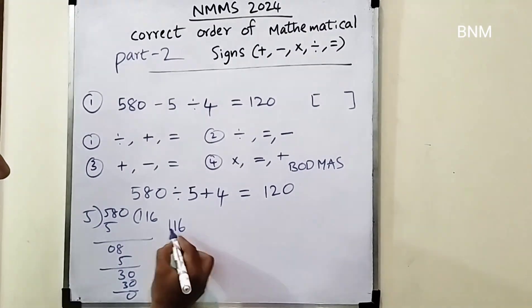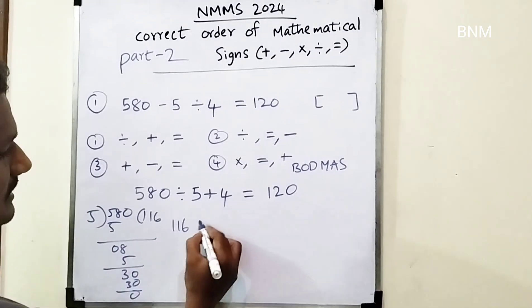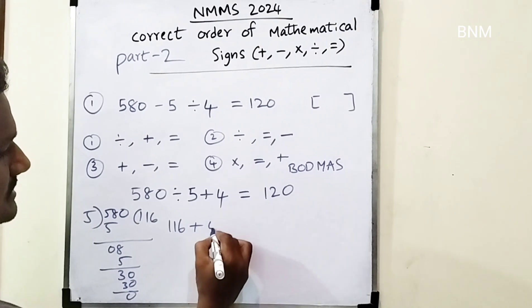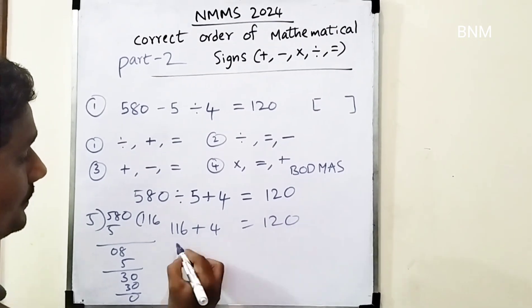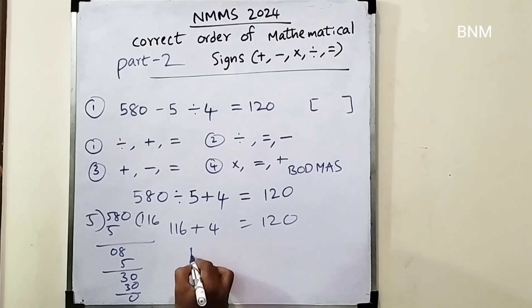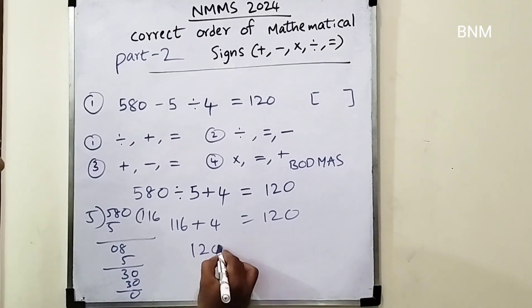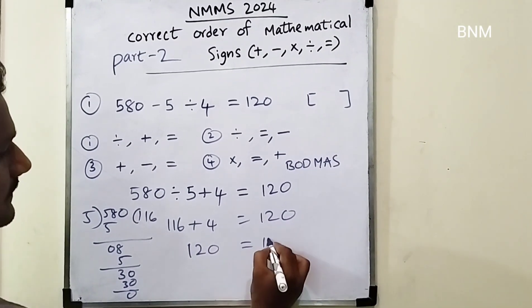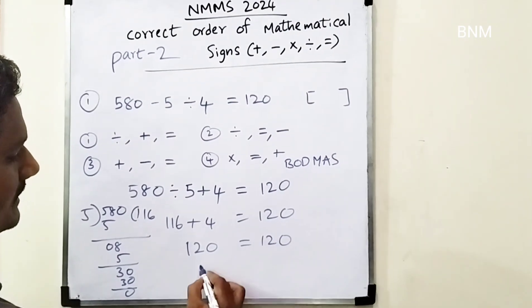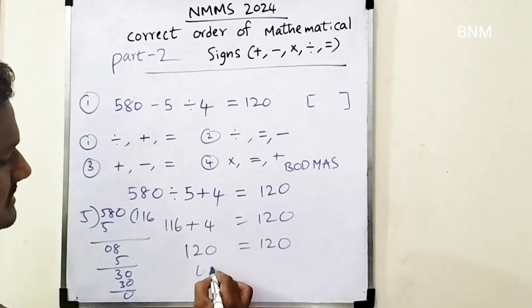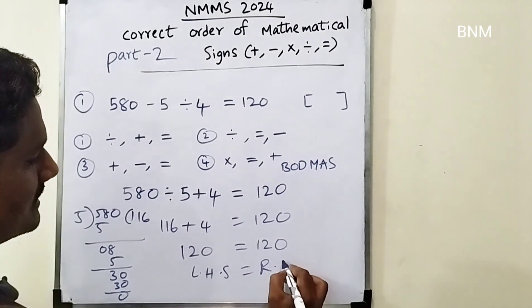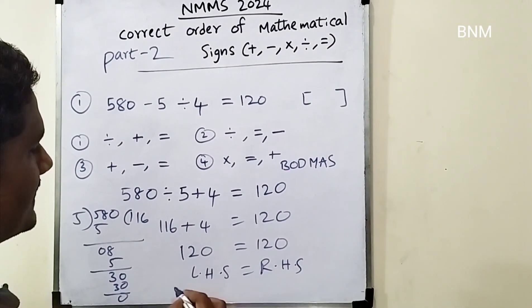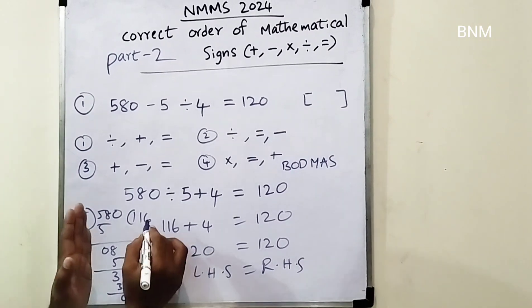Division first. Then we have to do addition. If we add, we have 120. LHS — left-hand side — and RHS — right-hand side — equalize.